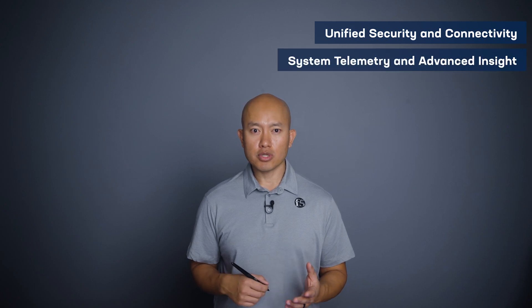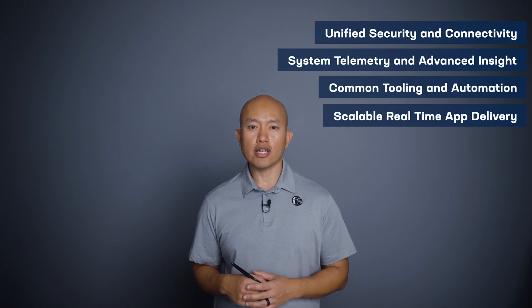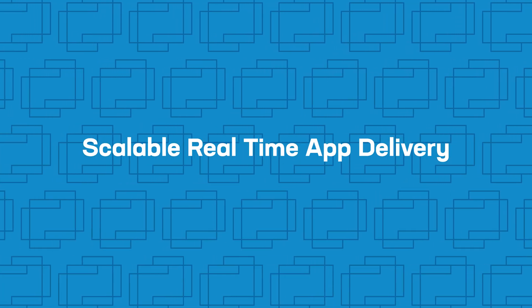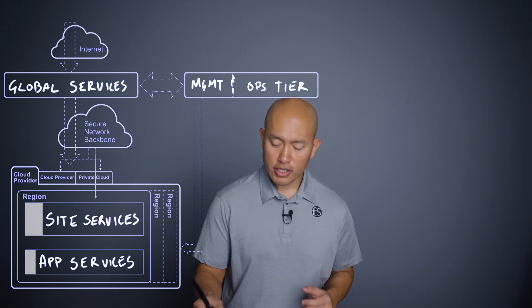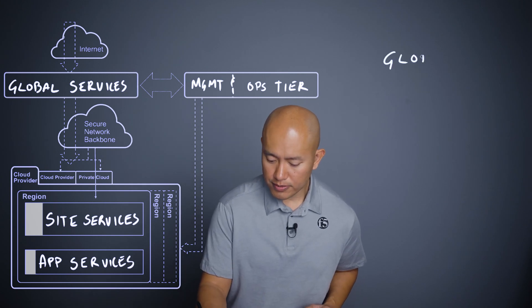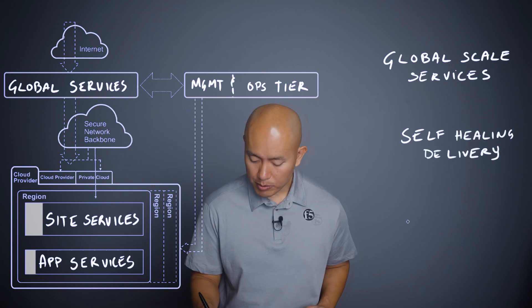The four key benefits are: unified security and connectivity, system telemetry and advanced insight, common tooling and automation, and scalable real-time app delivery. Let's dive deeper into these four key benefits, starting with scalable real-time application delivery. Three services we would offer at this tier are global scale services, self-healing delivery, and adaptive scaling.